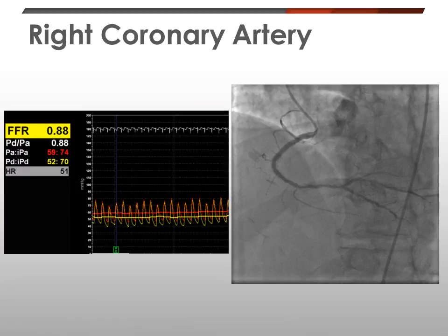I started with the right coronary artery. I took the pressure wire and guided it, parking it in the posterior descending artery. I started IV adenosine and the FFR recorded was 0.88, which is not significant. The right coronary artery stenosis is hemodynamically insignificant and does not need intervention.